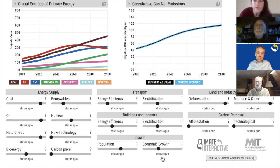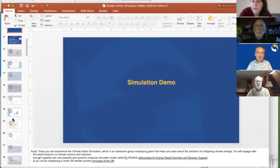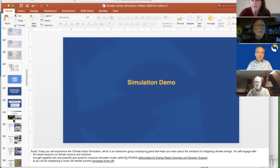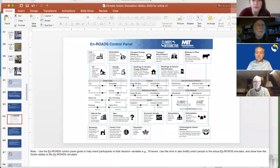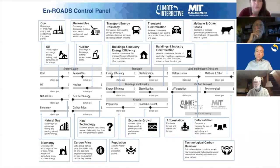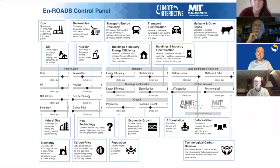Sure. So in the zip file that I sent in the chat, which is called Climate Action Simulation Materials, you'll find a document called Guide to the Control Panel. In that zip file you'll be able to see in the chat, that's where you'll find that document. If you're not able to find it in chat, write in chat and she'll answer and direct you.